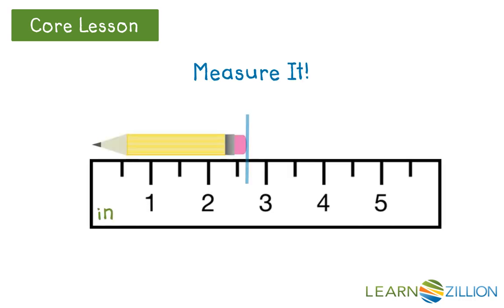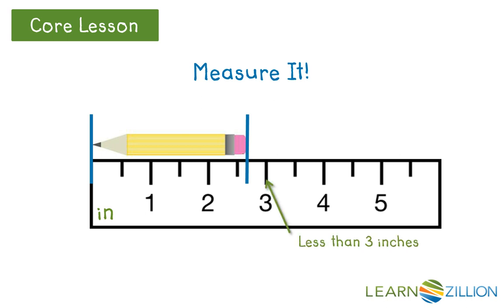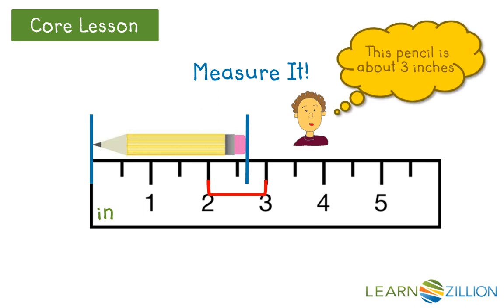Let's measure this pencil from our desk. Let's first mark our ruler with the pencil's length using these blue lines. We can see that the pencil is more than two inches and more than two and one half inches long. We can also see that the pencil is less than three inches long. Since the pencil is more than two and one half, it is closer to three inches than two inches. We can say that this pencil is about three inches long.